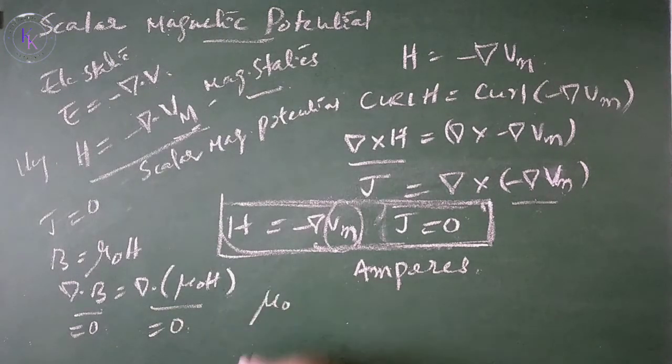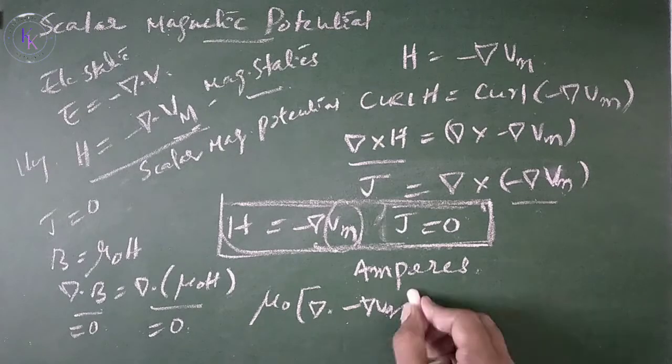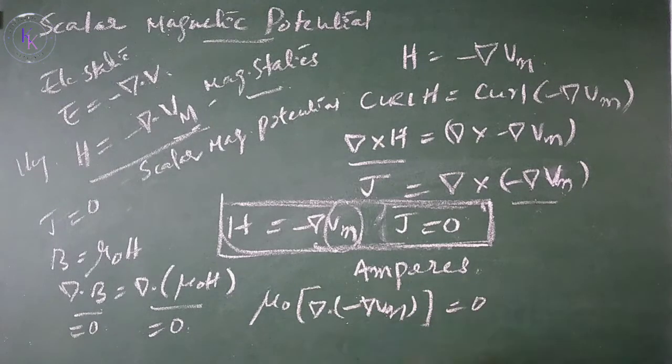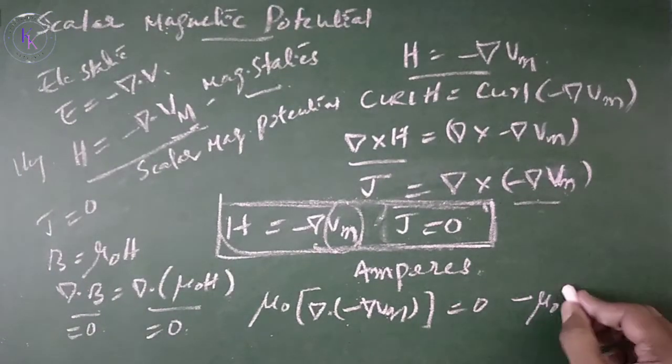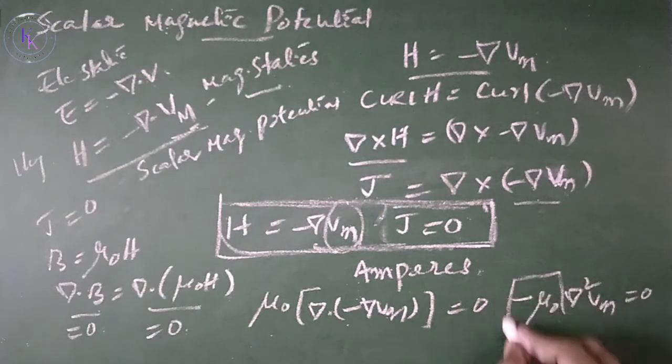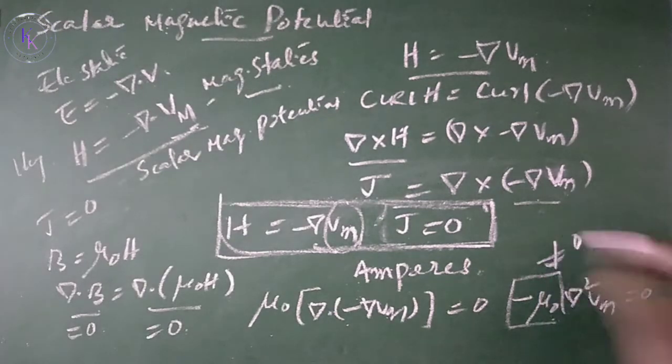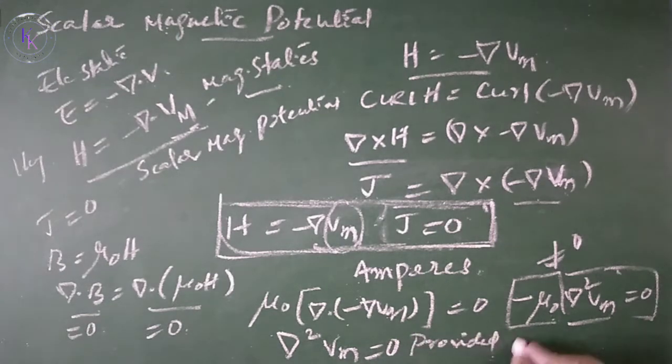Or we can say mu naught del squared Vm equals 0. We know that mu naught is not equals to 0. Then this must equal del squared Vm equals 0, provided J equals 0. This is nothing but Laplace equation.